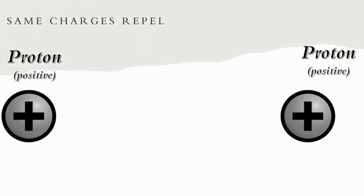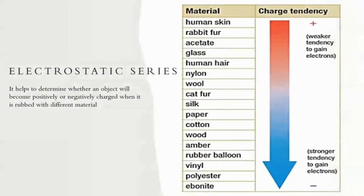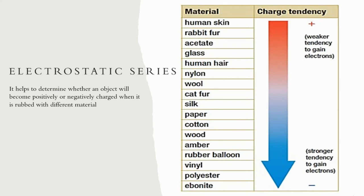Now, how do we know if an object or matter becomes positively and negatively charged? We will use electrostatic series. This is a chart that helps to determine whether an object will become positively or negatively charged when it is rubbed with different material. Materials such as human hair, rabbit fur, acetate, glass, nylon, wood, and cat fur have weak tendency to gain electrons. They lose their electrons to give to another object where they made contact.